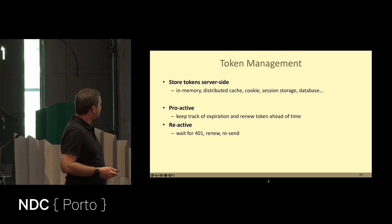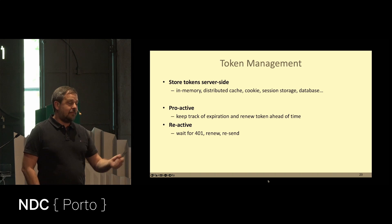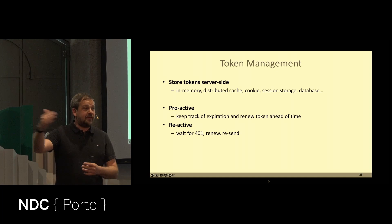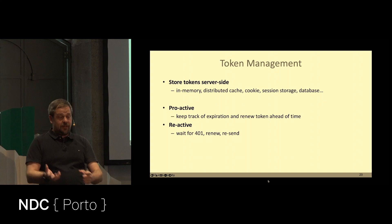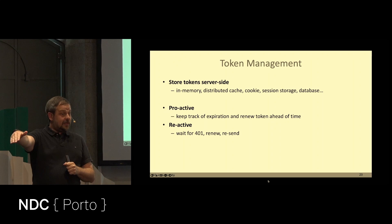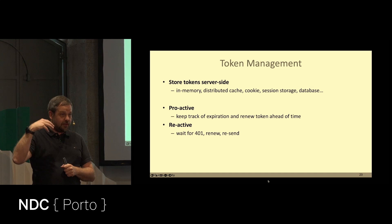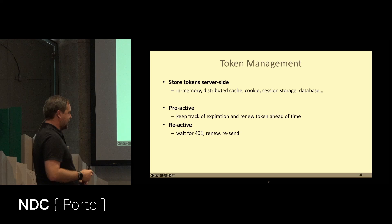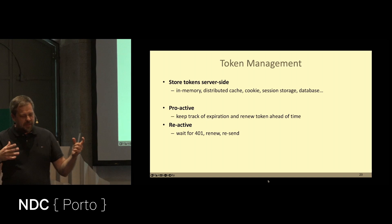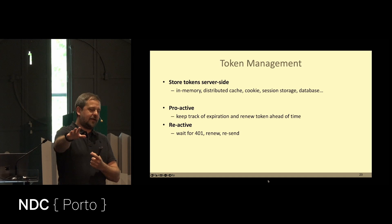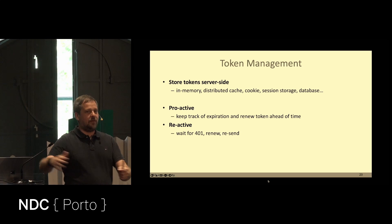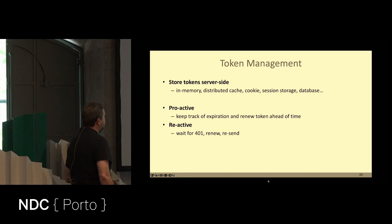That helps with token management. Every client application must somehow manage their tokens — you don't want to get a new token for every API call. What you typically want to do: get a token, keep it in memory or a cache or a database, and use it until you get a 401, which means it's expired. Then get a new one, cache that, and start over. In .NET you can nicely abstract that away with HTTP message handlers and HTTP client: get the token, if a 401 gets returned get a new token under the covers, try again, and if it's still a 401, surface the error.